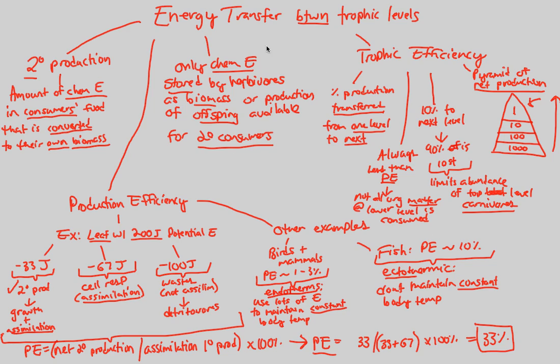So overall, through this energy transfer between trophic levels, we've established the idea of secondary production. The food that consumers eat has its own energy within it, and however much of that energy we can keep for ourselves will be considered our growth and assimilation secondary production. There will also be other concepts like cell respiration and waste to keep in mind.